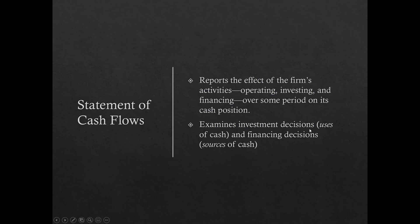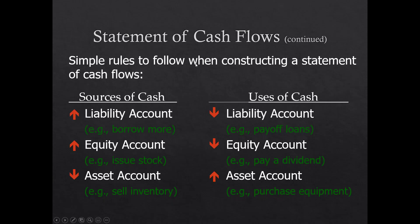General rules for the statement of cash flows: if a liability account goes up, you've borrowed money — that's a source of cash. If an equity account goes up, someone invested — source of cash. If an asset account goes down, you converted an asset to cash — source of cash. Conversely, uses of cash include: liability account goes down (paid off a bill), equity account goes down (paid dividends), or asset account goes up (bought something of value).